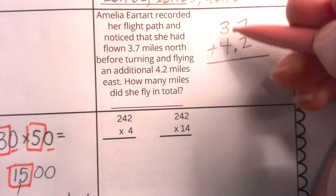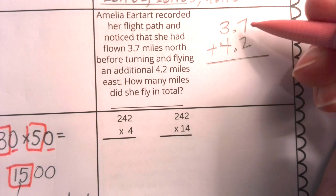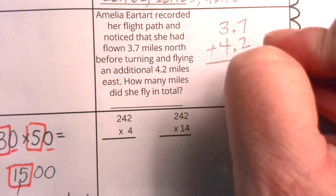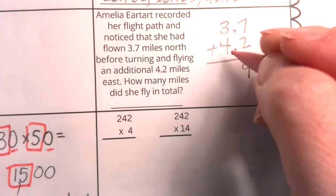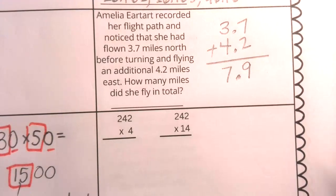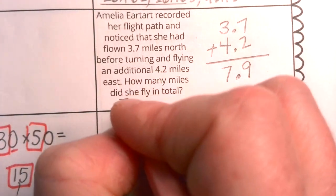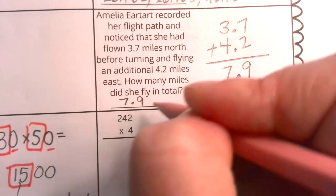I know I do if those decimals are aligned because over here the seven and the two are in the tenths place. Seven tenths plus two tenths equals nine tenths. Three plus four in one's place equals seven tenths. And do not forget your decimal.